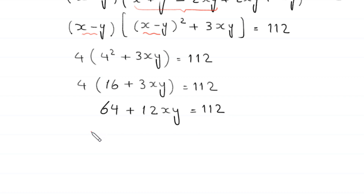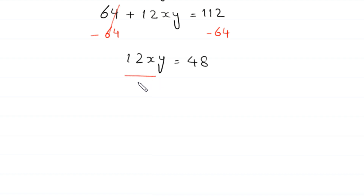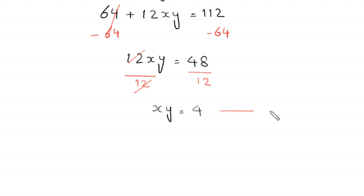We subtract 64 from both sides, so the positive 64 cancels with the negative 64, leaving 12 times xy equal to 48. Dividing both sides by 12, the 12 cancels and we get x times y equals 48 divided by 12, which is 4. Let us call this equation 3.